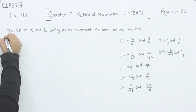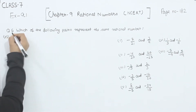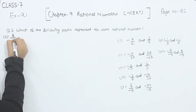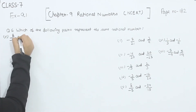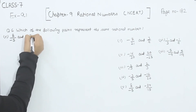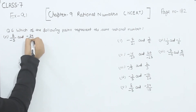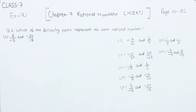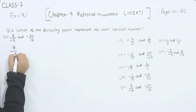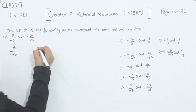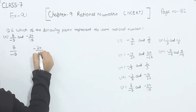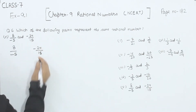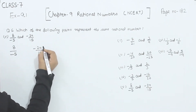Now comes part 5. We have 8 by minus 5 and 24 by 15. First, 8 by minus 5 is already in the simplest form. We will simplify 24 by 15 — dividing by 3: 3 fives are 15 and 3 eights are 24.